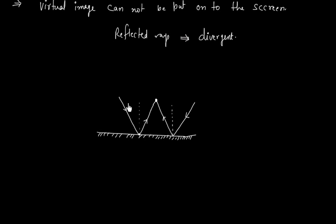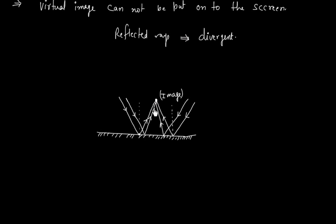Similarly we can consider some more rays. If I have a ray coming here, it will reflect and meet at a point. Similarly on this side, it will reflect and meet at the same point. So the image is formed at this intersection point — the image is formed by the intersection of the reflected rays.